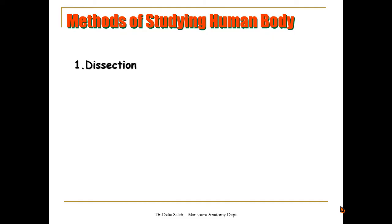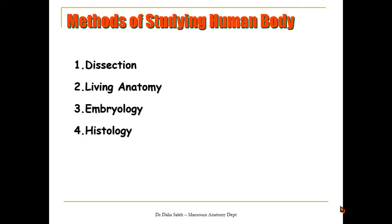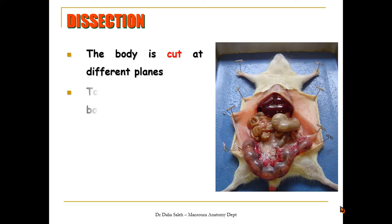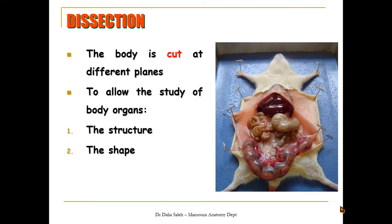The methods of studying the human body include dissection, living anatomy, embryology, histology, endoscopy, and radiology. For dissection, as we can see here in this dissected specimen, the body is cut at different planes to allow the study of the body organs regarding their structure, shape, and relations to each other.